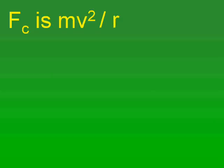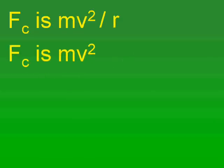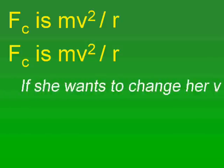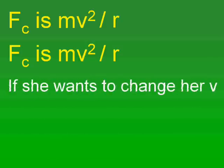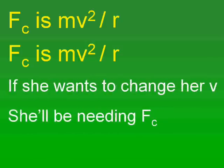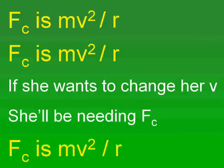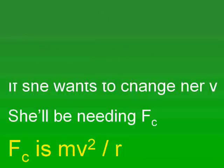F sub c is mv squared over r. If she wants to change her v, she'll be needing F sub c. F sub c is mv squared over r. Yeehaw!